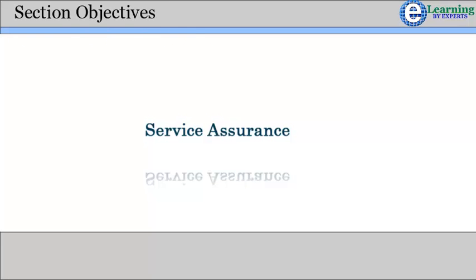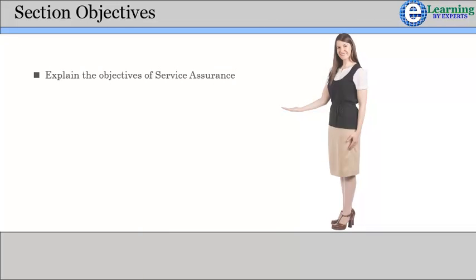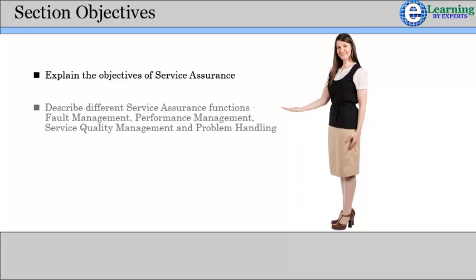After completing this section you will be able to explain the objectives of Service Assurance, describe different Service Assurance functions: Fault Management, Performance Management, Service Quality Management, and Problem Handling.